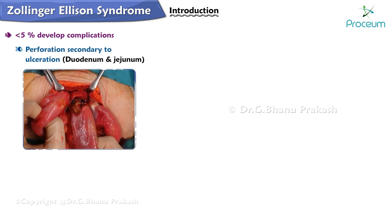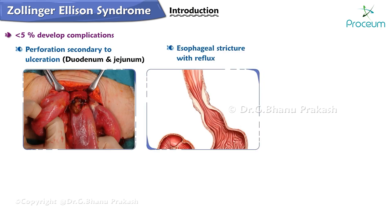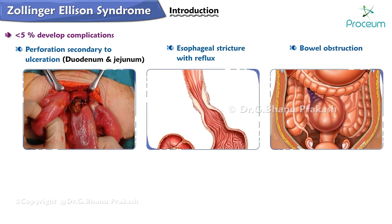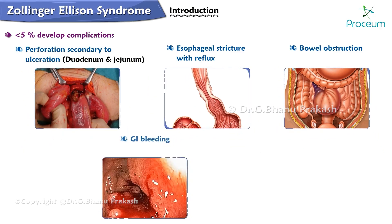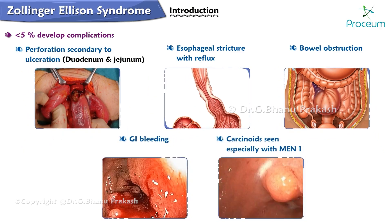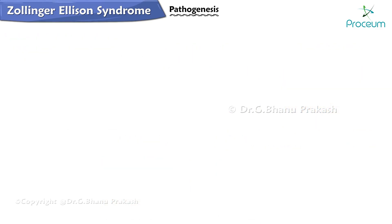Less than 5% develop complications such as perforation secondary to ulceration — most commonly in the duodenum and jejunum — esophageal stricture with reflux, bowel obstruction, gastrointestinal bleeding, and carcinoids seen especially with multiple endocrine neoplasia type 1.